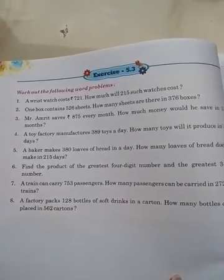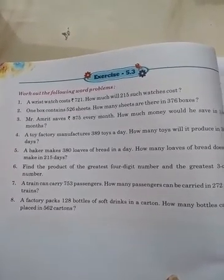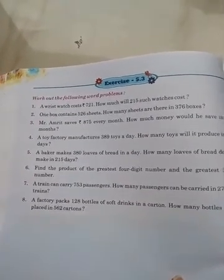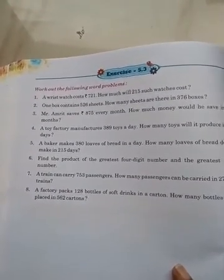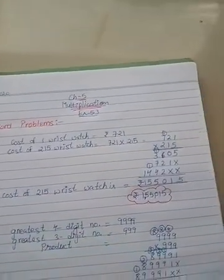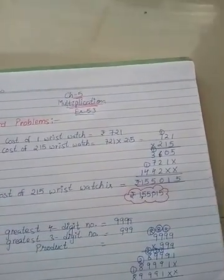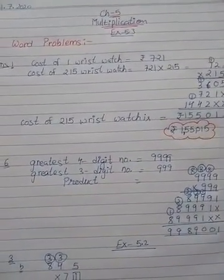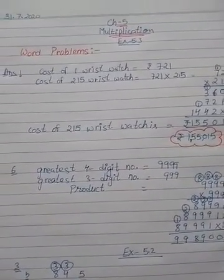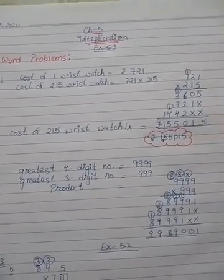How much will 215 such watches cost? You have to tell the cost for 215 of the same watches. That means ₹721 is for one watch, and they want 215 watches. So what you have to do is just write the statement and do the multiplication as I told you in earlier classes.